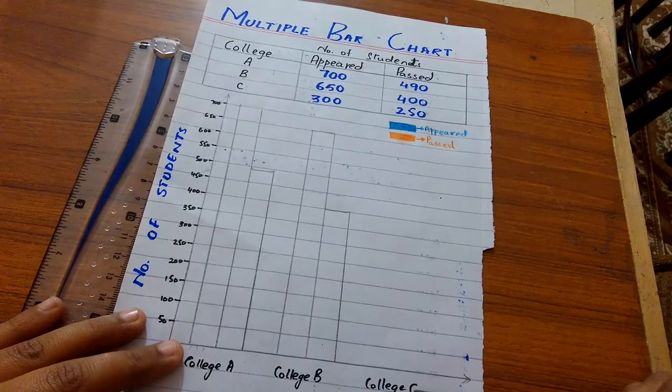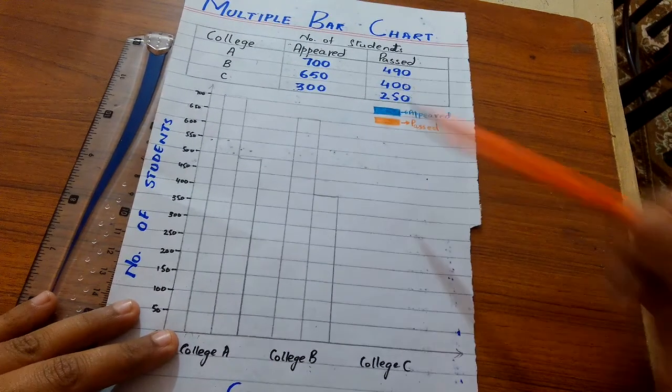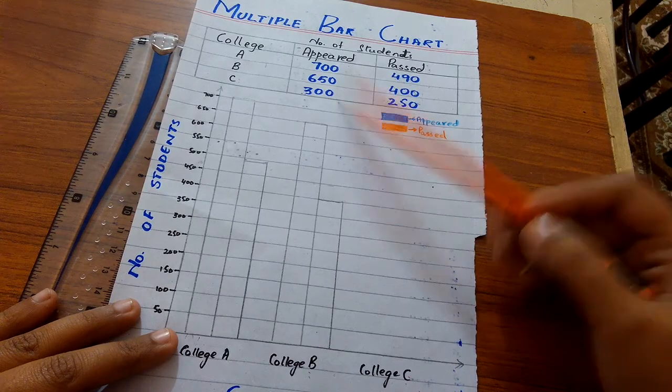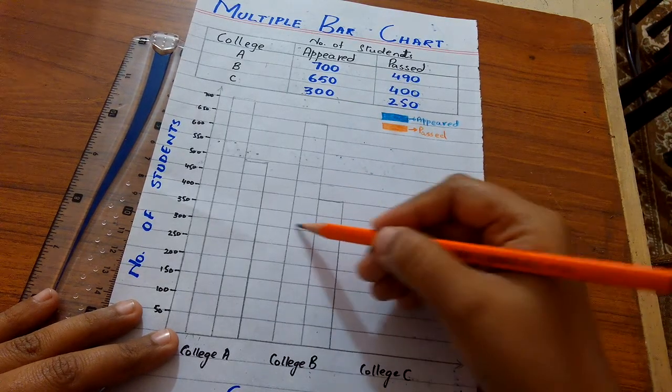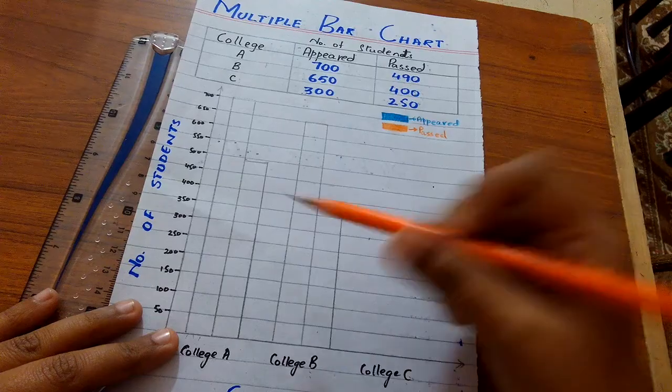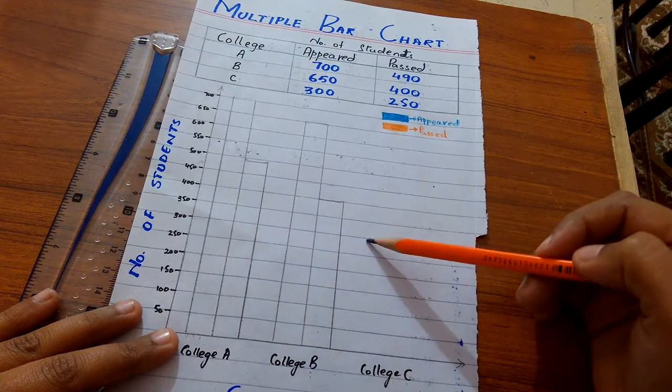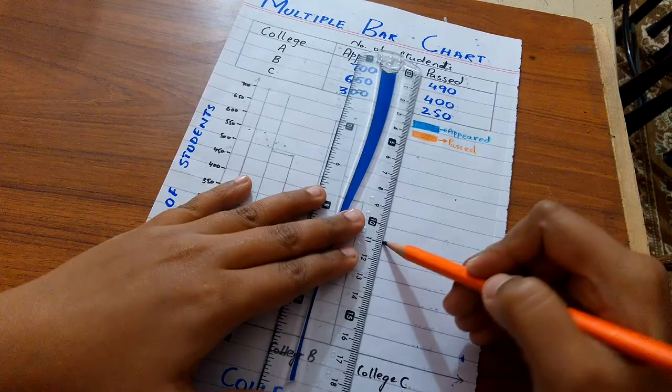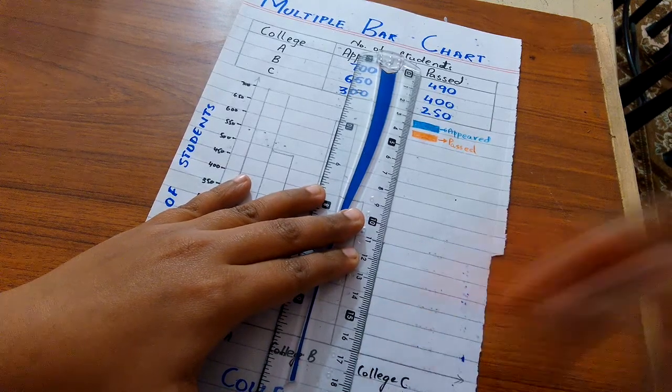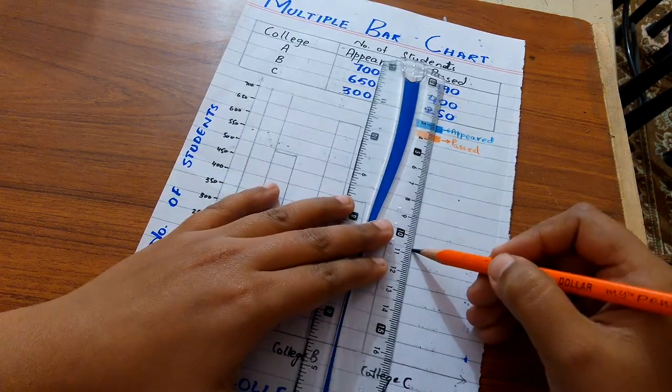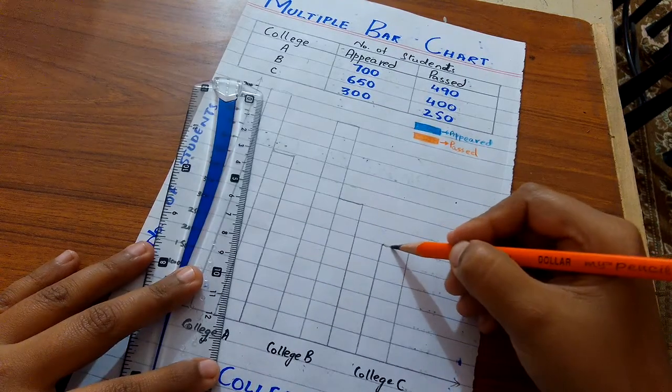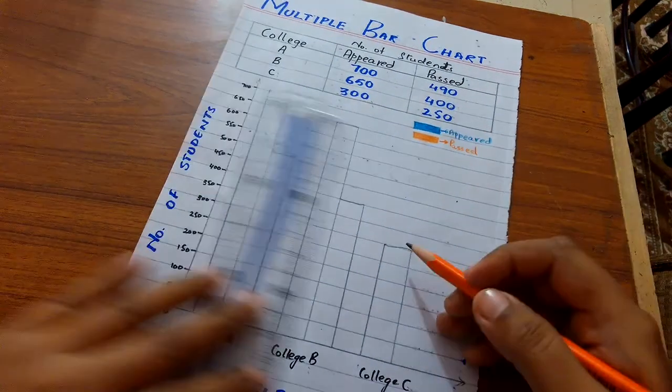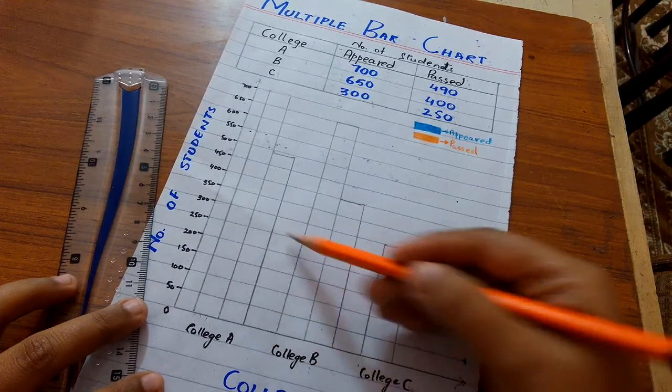Now college C. Total number of students who have appeared in exam from college C is 300. And from college C, total 250 students have passed the exams.